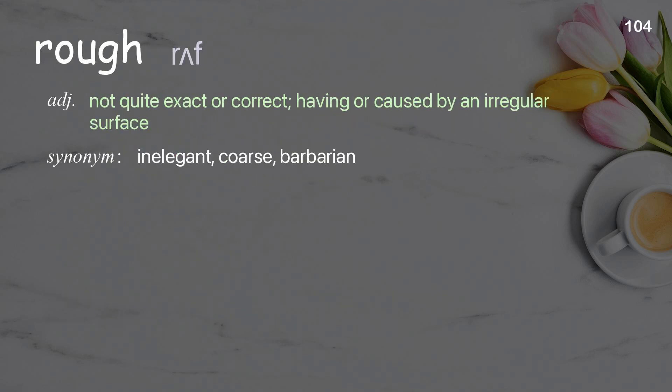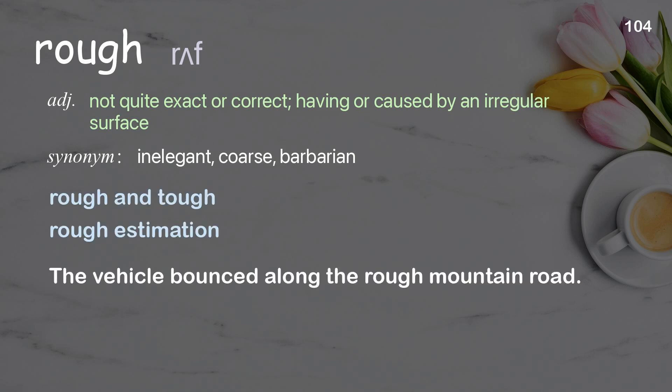Rough: not quite exact or correct; having or caused by an irregular surface. Examples: rough and tough, rough estimation. The vehicle bounced along the rough mountain road.